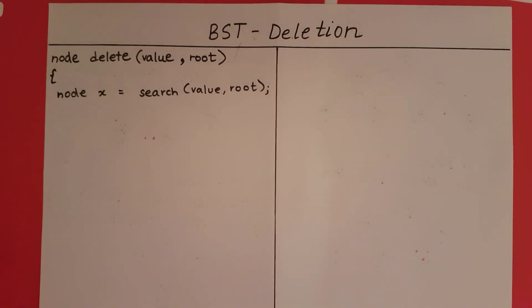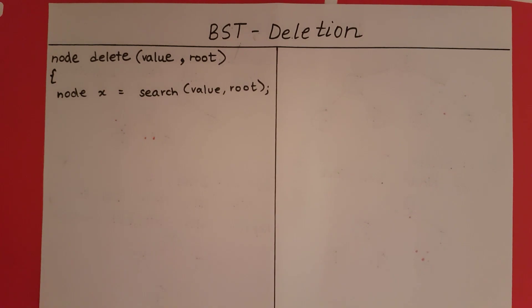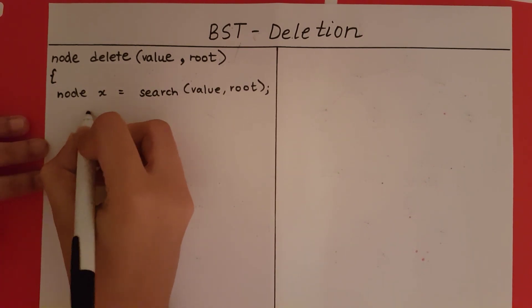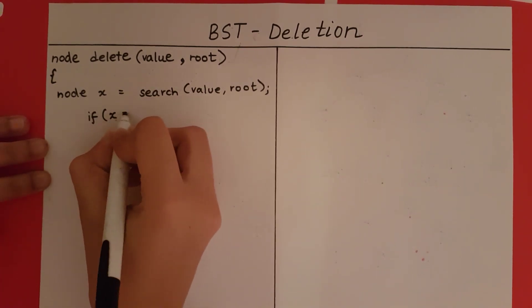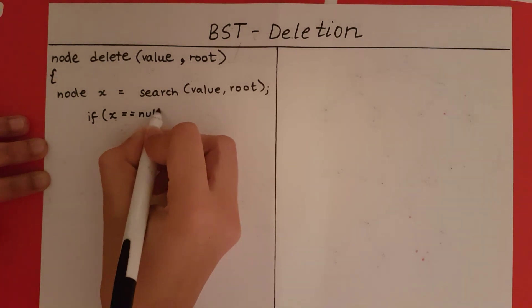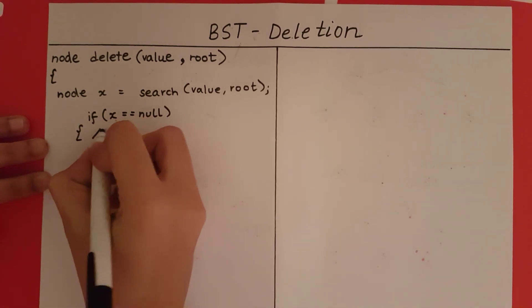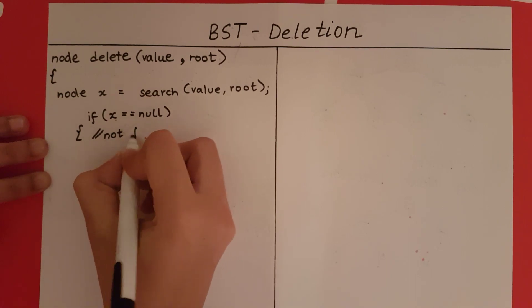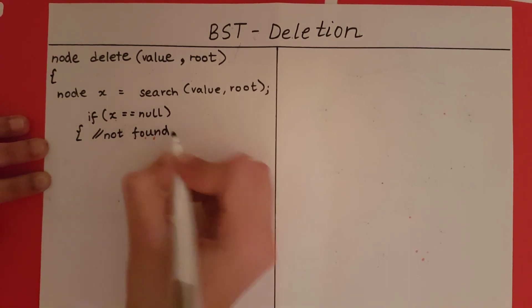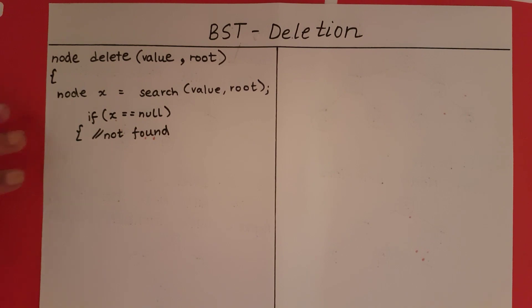So let's see what we can do with this information. If this function returns null, we know that the value is not in the tree — in that case there is no way we can delete that value. So if x is equal to null, it means the value we are trying to delete does not exist in the tree, and we cannot delete it, so we return null.